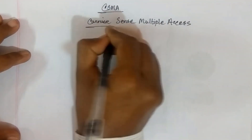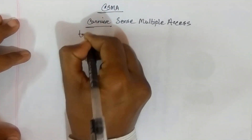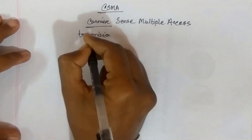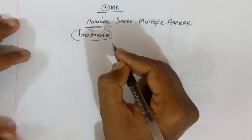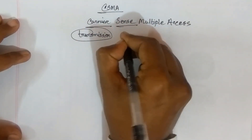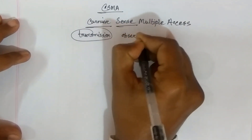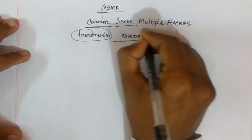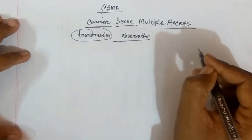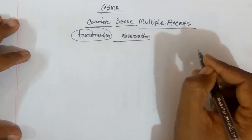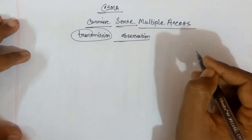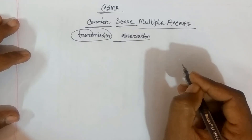Carrier means Transmission. Sense means Observation, and Multiple Access — together this forms Carrier Sense Multiple Access (CSMA).